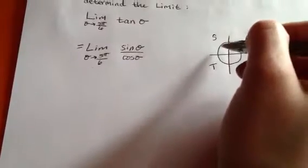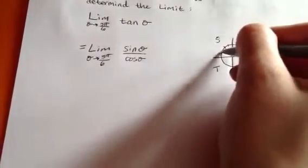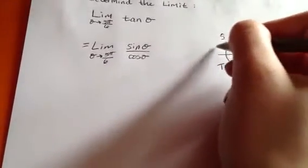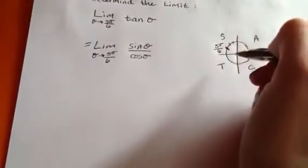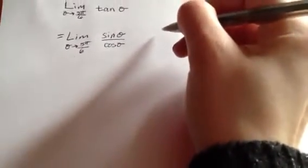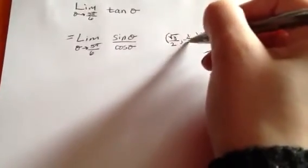And 5 pi over 6 would be at this point, which is square root of 3 over 2, negative 1 half.